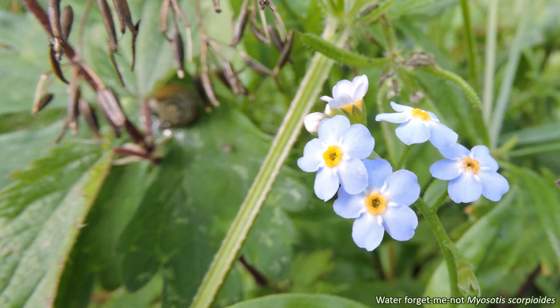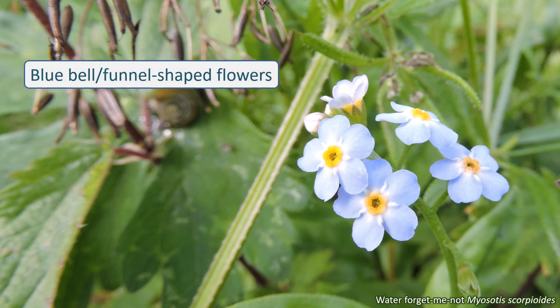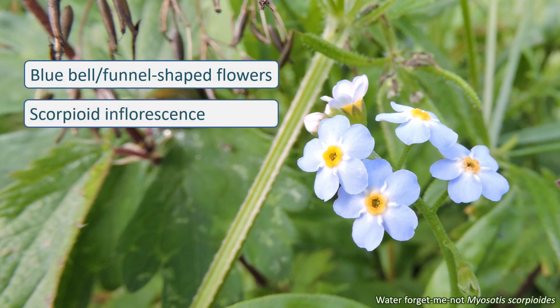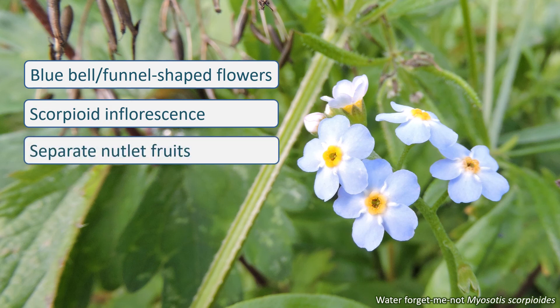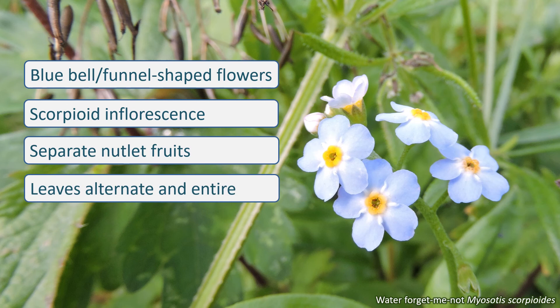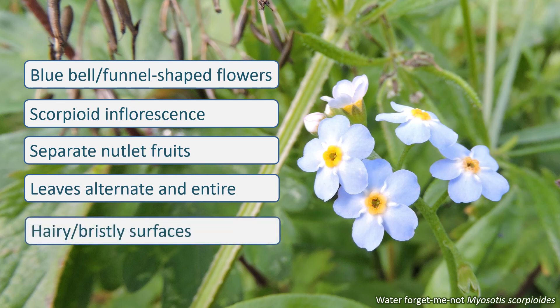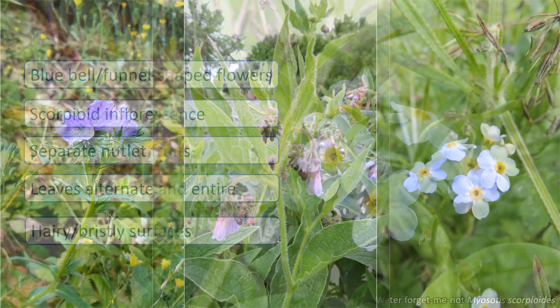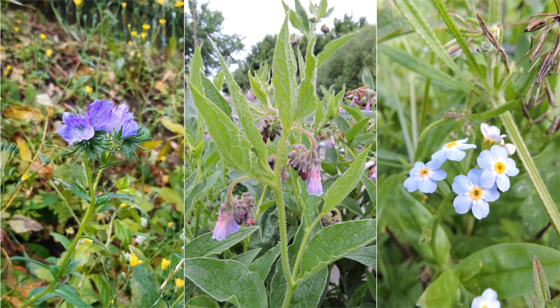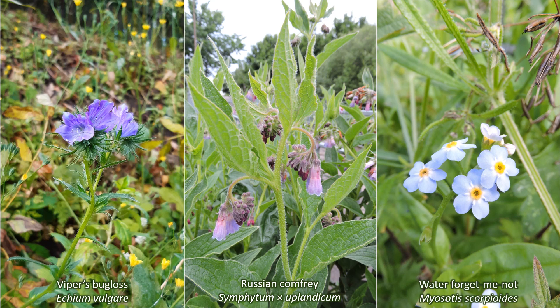So, if a plant has blue, bell or funnel shaped flowers, growing in a coiled scorpioid inflorescence, has four separate nutlet fruits, the leaves are alternate and entire, and the plant is hairy or bristly, then you've got a species in the Boraginaceae. Three species you can look out for are Viper's bugloss, the garden escape Russian comfrey, and Water forget-me-not, Myosotis scorpioides.